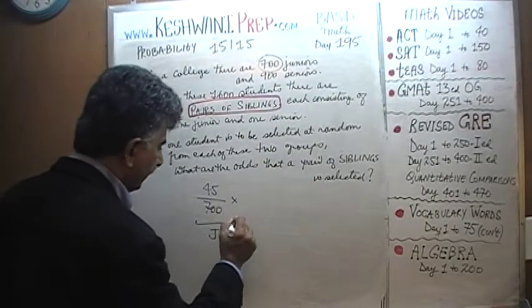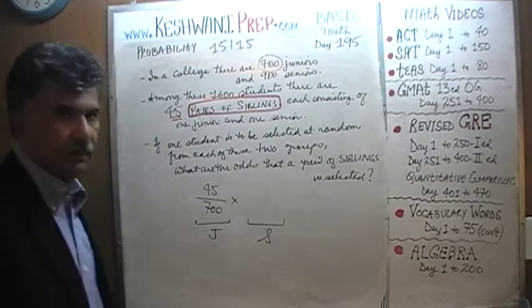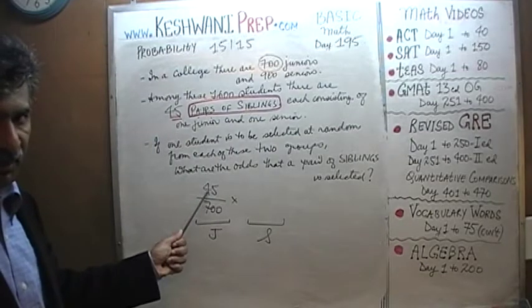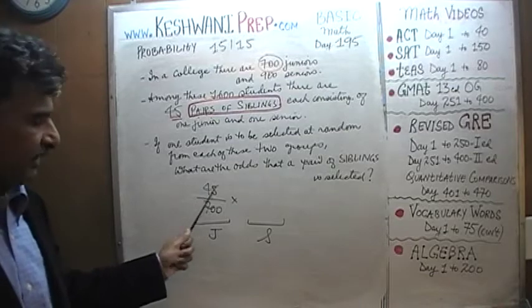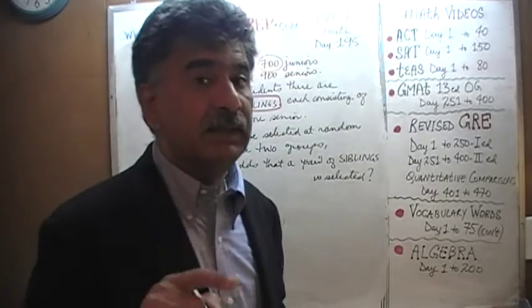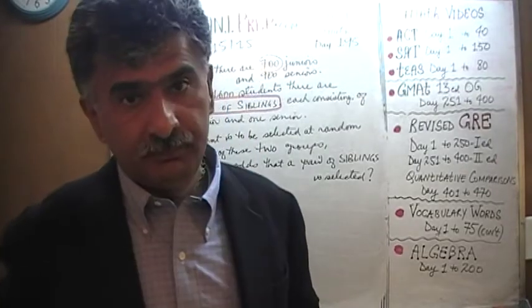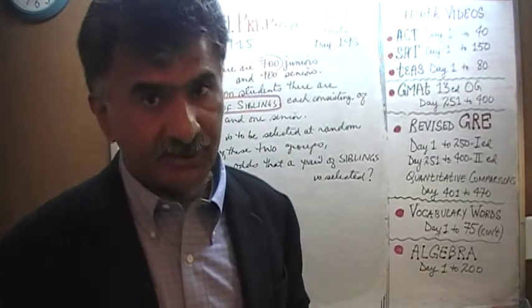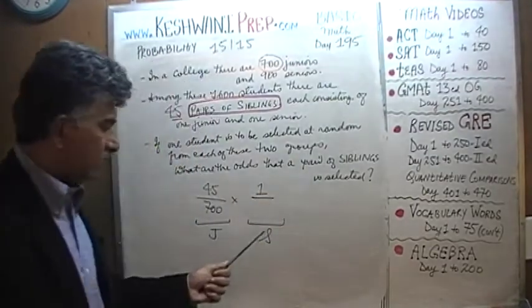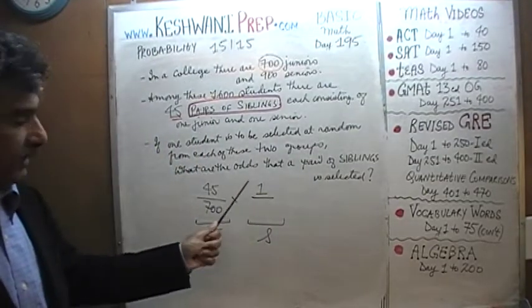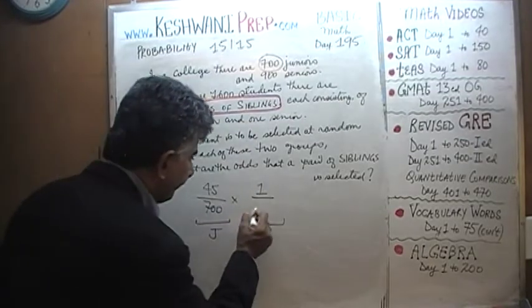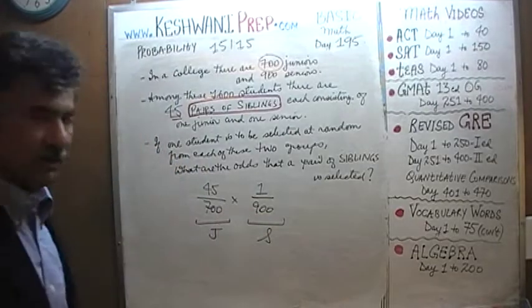Now let's pick a senior. Once we have picked one of those juniors who happens to have a sibling in the other class, what are the odds that we end up picking exactly that one matching person? There is only one person out of the senior group who qualifies as this person's sibling. And how many seniors are there? 900. That's it — we're done.